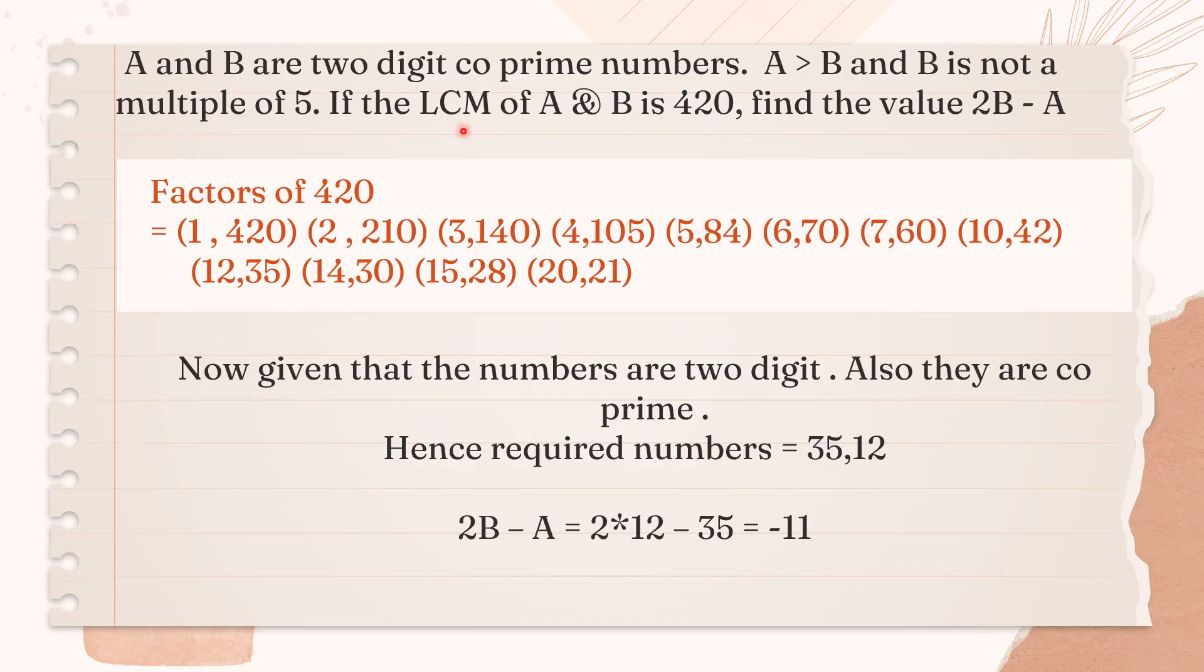We begin from the point where they have given that LCM of A and B is 420. First of all, find the factors of 420. Here is the list of all the factors.